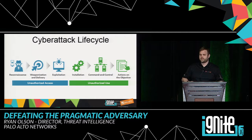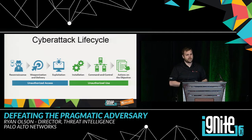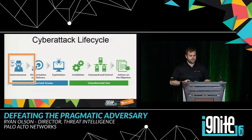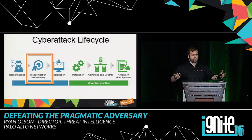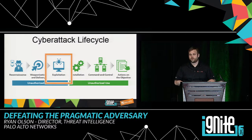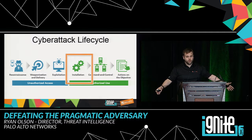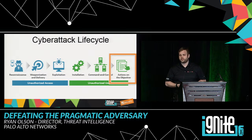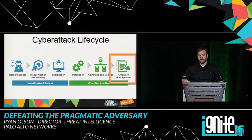If you've seen a kill chain before, this is one example. We call this the cyber attack lifecycle. I'm going to walk through each of these six phases: reconnaissance, where Bob is trying to identify who he wants to attack and how; weaponization and delivery, when he's actually trying to deliver his payload into your network; exploitation, where he takes advantage of a vulnerability, possibly a human; installation, where he deploys tools; command and control, where he interacts with those tools; and finally actions on objectives, where he takes your data.